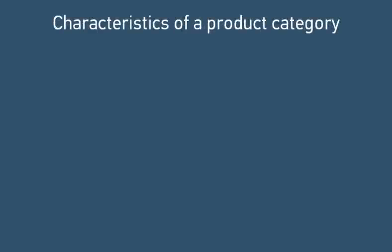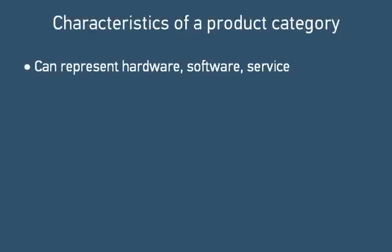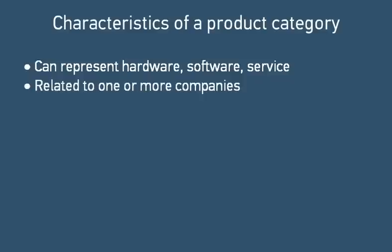A product category can represent a hardware product, a software product, or a business or technical service. You can relate a category to specific companies for whom it can be used, or you can relate it to Global to use it with all companies. You also relate each category to the specific ITSM, SLM, or SRM modules in which it can be used.